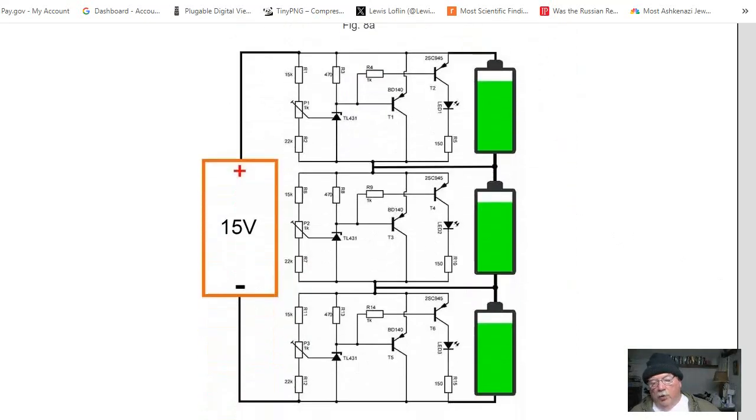Here is an example off the internet of what this accomplishes. If one cell charges up before the other, the current will be bypassed through Q1 and it will not allow this cell to exceed 4.2 volts. And as they all charge up to 4.2 volts, the current will be bypassed through each cell control circuit.